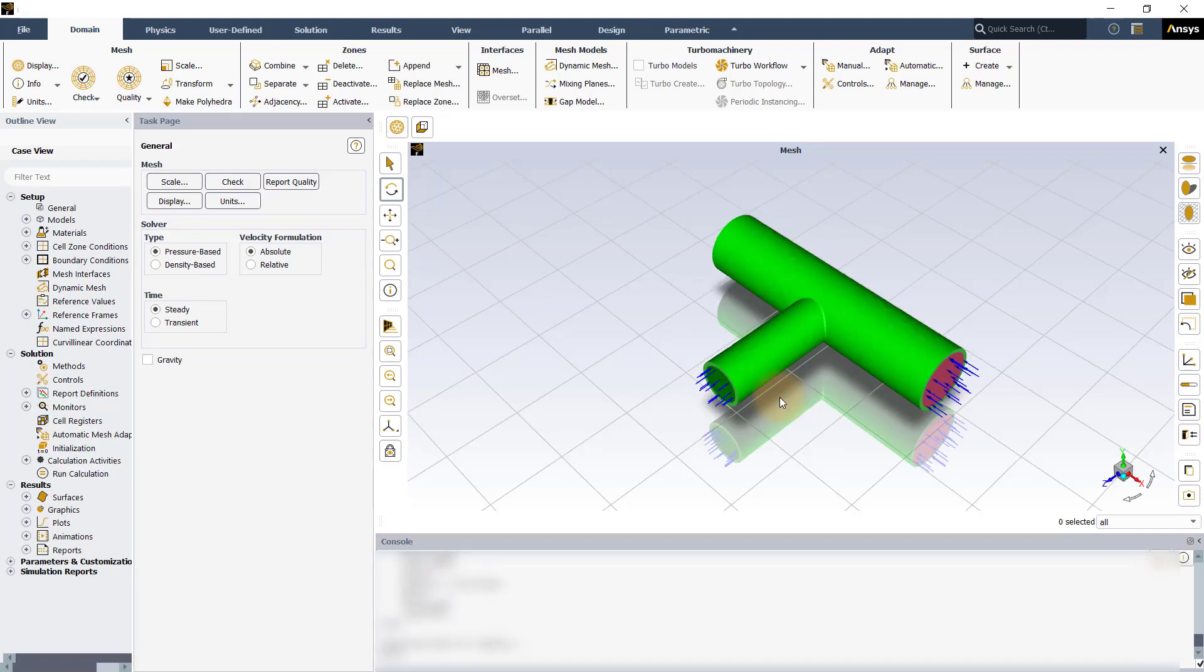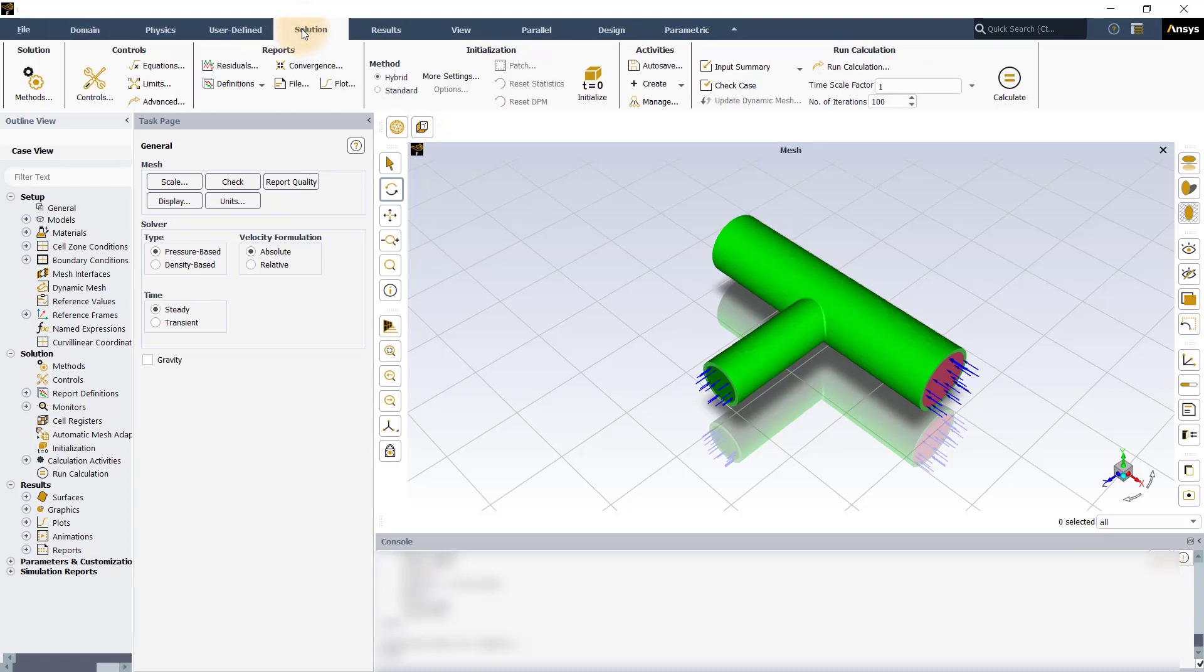The computational model setup is already completed in ANSYS Fluent. Now, let us directly proceed to look at how different initialization methods can be employed here. Go to the solution tab. Note that the solution tab can be accessed from the ribbon, as well as from the tree in the outline view.